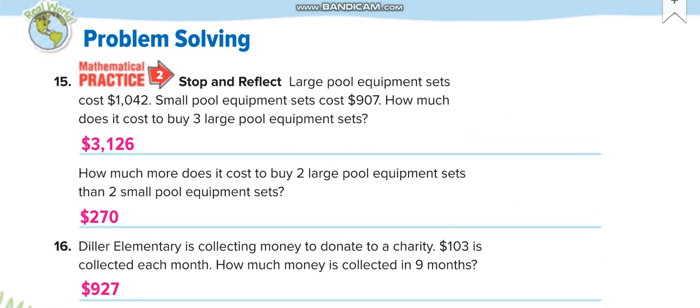Here now, large pool equipment sets cost $1,042 each. Small pool equipment sets cost $907. How much does it cost to buy 3 large pool equipment sets? So the large pool costs $1,042, so you multiply it by 3, which equals $3,126.